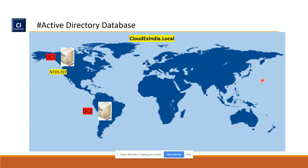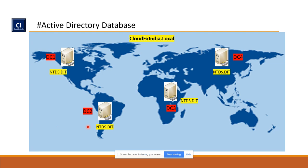Suppose you have another domain controller in a different region or location, and a total of four domain controllers. When you promote DC2, what happens is it also creates two folders — NTDS and SYSVOL. All domain controllers do the same thing during promotion.